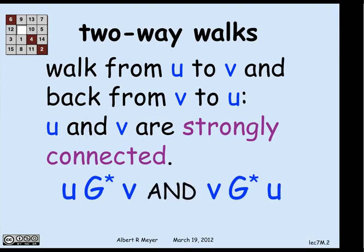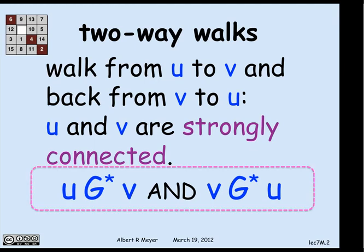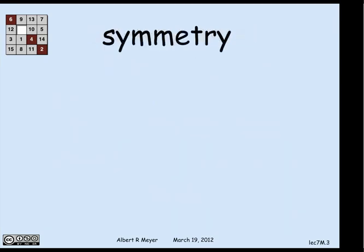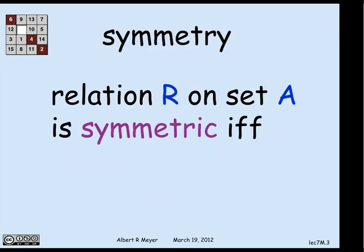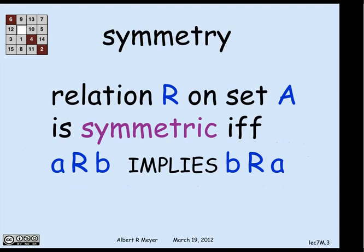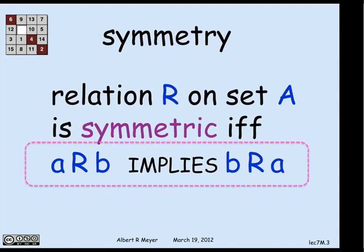In terms of the walk relation, including zero-length walks, the relation we're talking about is u G* v and v G* u. As a property of relations, this has a name — it's called symmetry. A relation R on a set A is symmetric if and only if a R b implies b R a. The strongly connected relation is symmetric.